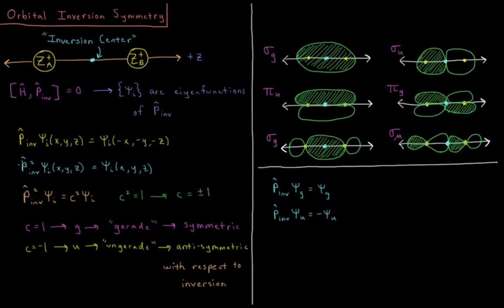All right, so if I apply this inversion operator twice to an orbital, then it's going to go to negative x, negative y, negative z, and then going to go back when I multiply it times minus one again. So the inversion operator squared acting on a molecular orbital since we're dealing with molecules.